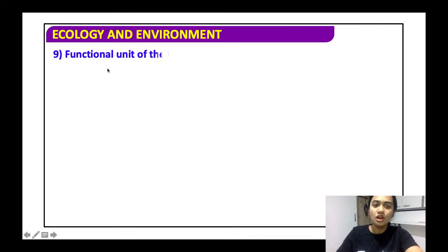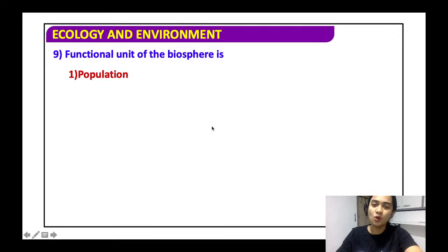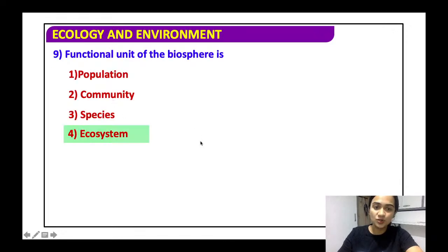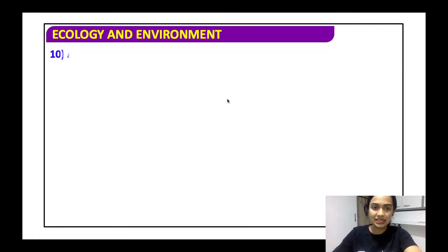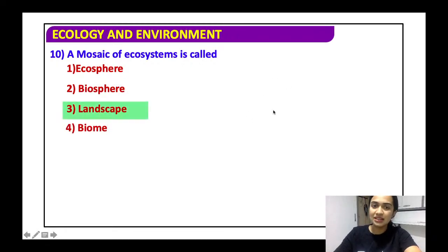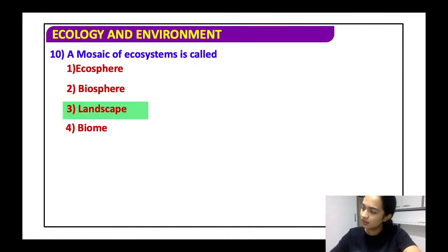A mosaic of ecosystems is called a landscape — we just discussed that. A large community of plants and animals occupying a vast region is called a biome — this is an ecological hierarchy question. Soil and soil properties influencing the life of organisms are called edaphic factors, which include soil pH and soil quality.